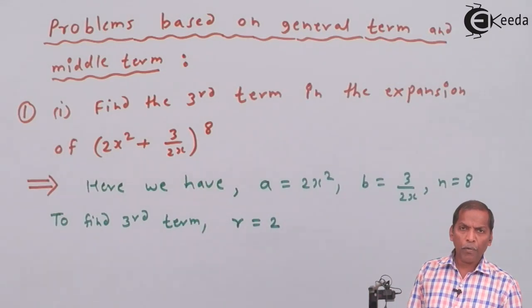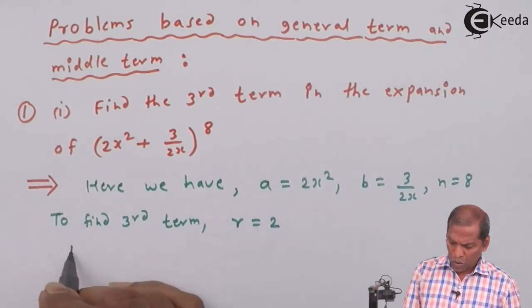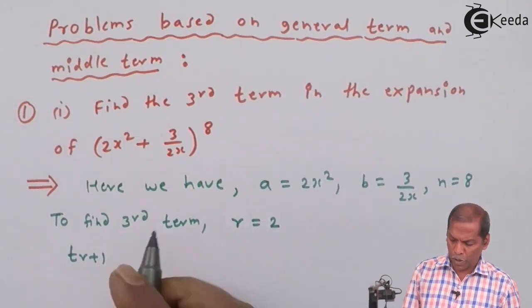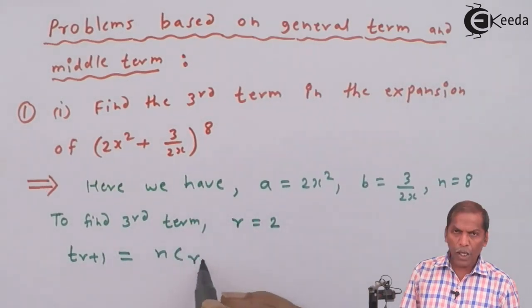Now here we write the formula for general term: t(r+1) = nCr × aⁿ⁻ʳ × bʳ.